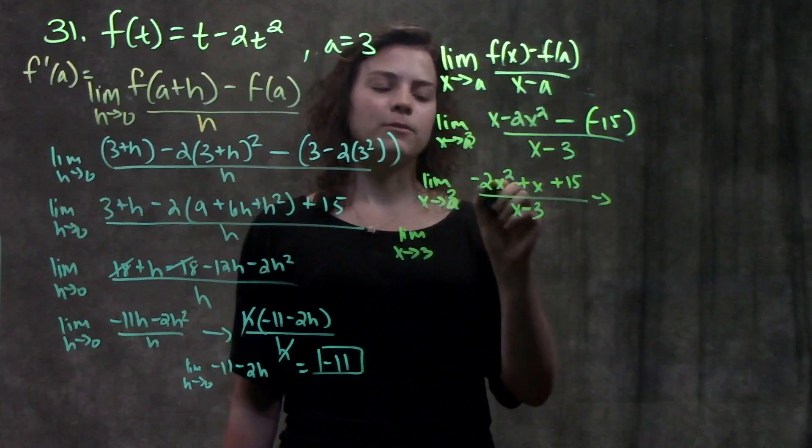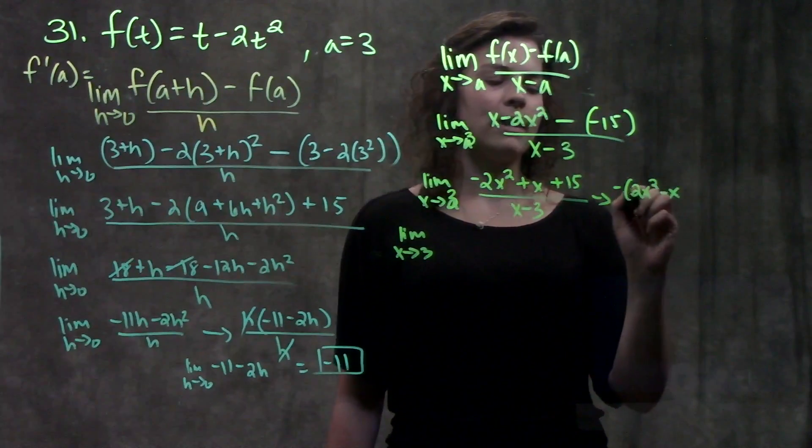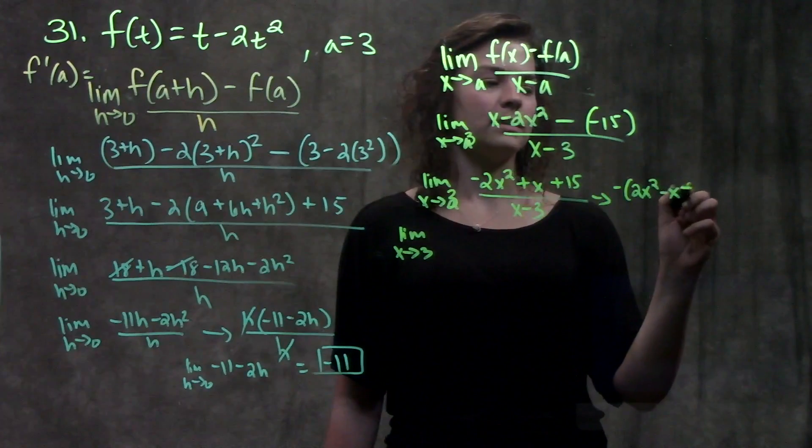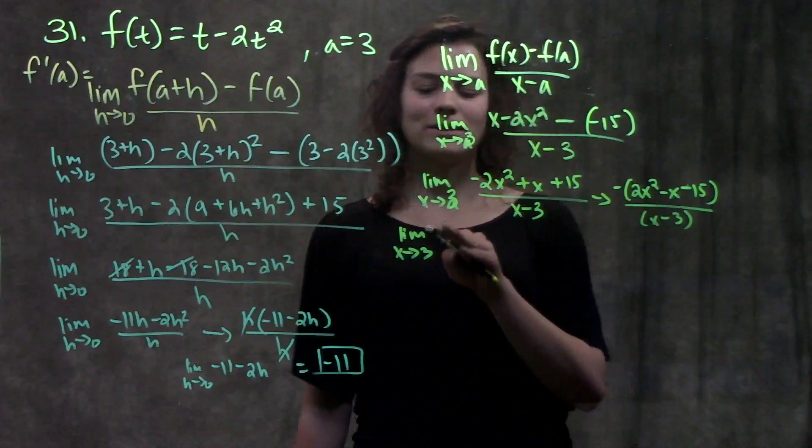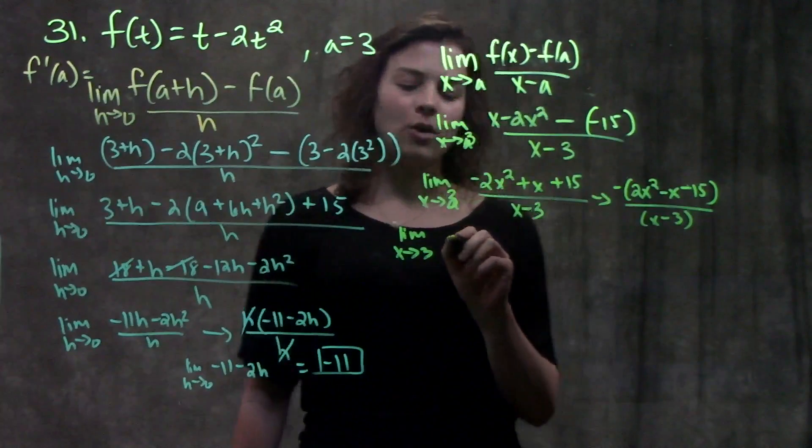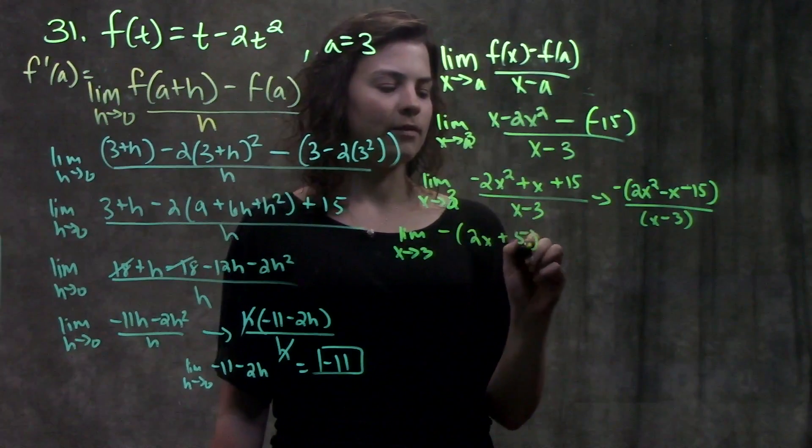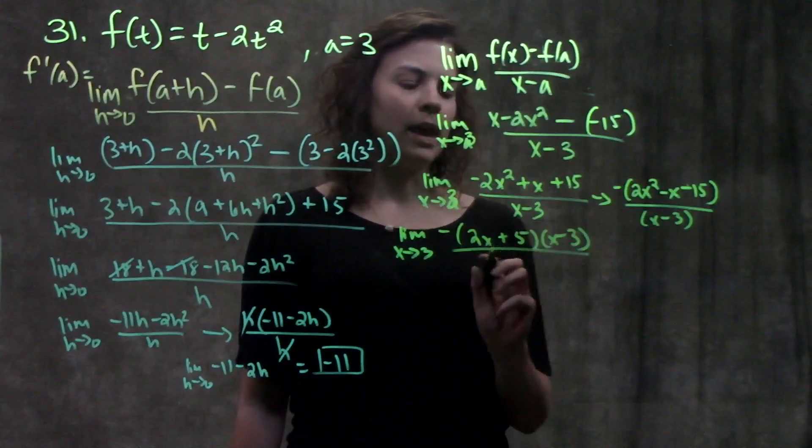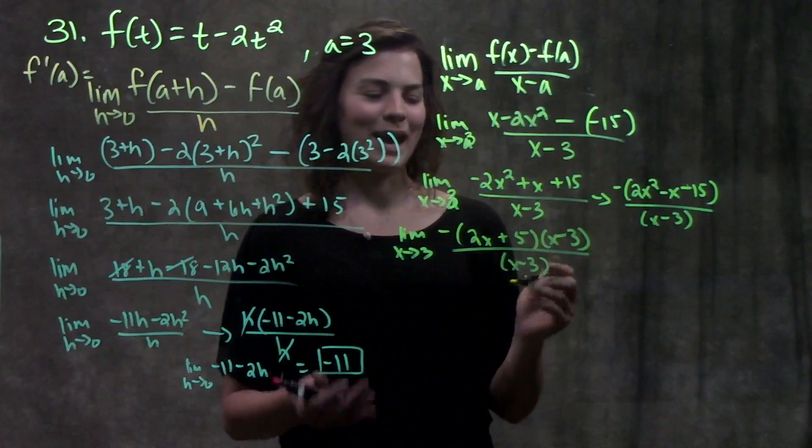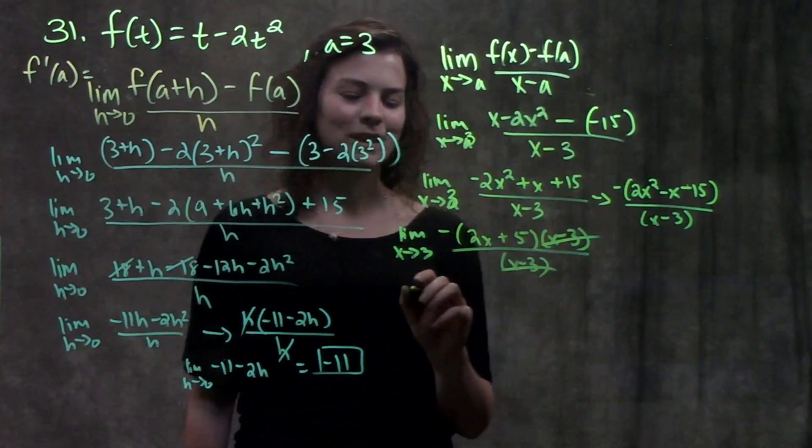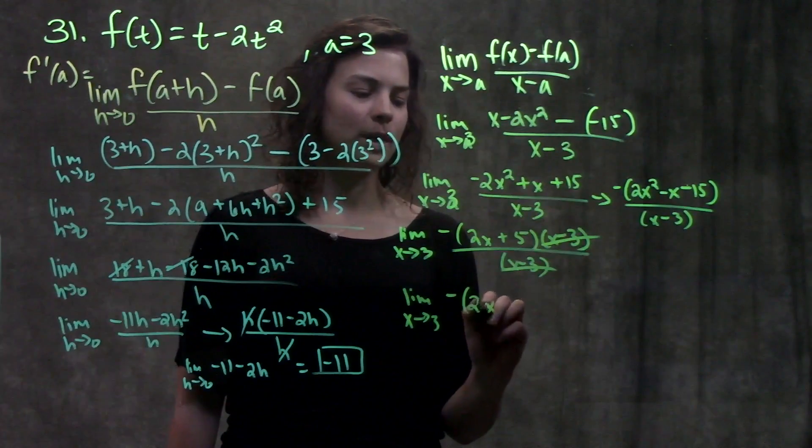Let's factor this quadratic on the top. First, before I do that, I'm going to take out this negative just so that it's easier to see. So now I have minus times (2x squared minus x minus 15), all that over x minus 3. Now let's factor this quadratic. When you factor this out, you're going to end up getting (2x plus 5) and (x minus 3) on the top. And on the bottom, you still have x minus 3. Just what we wanted to happen, one of our factors cancels.